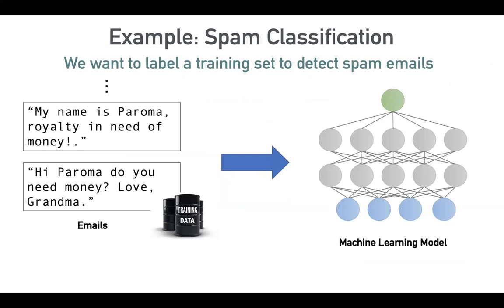So what does programmatically labeling data mean? To explain that at a high level, let's get started with an example. Let's say we want to create a machine learning pipeline that can tell us whether emails are spam or not. The first step is we need a set of labeled emails where each email is tagged as being spam or not spam.